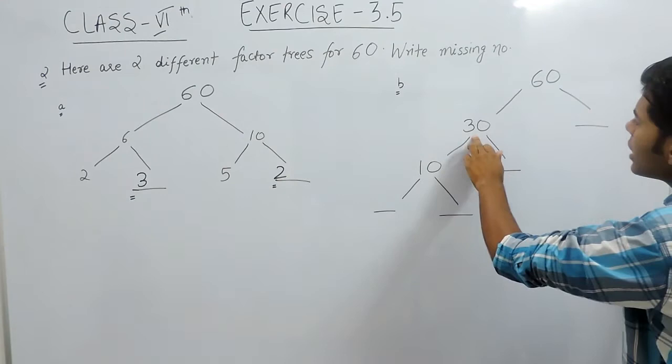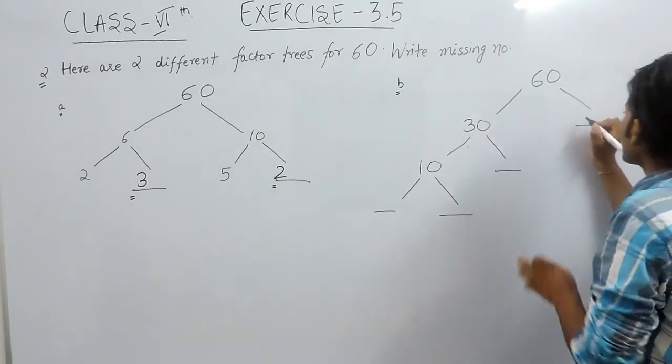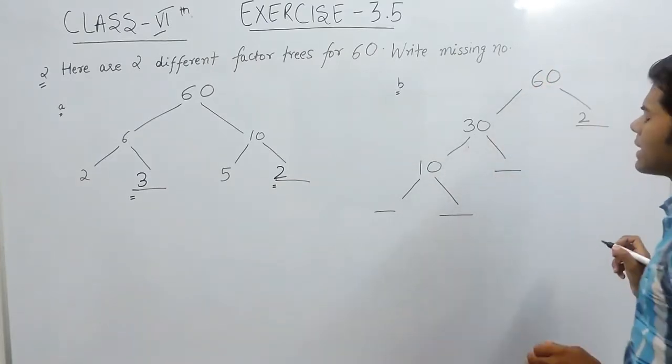it is given that 60 can be written as 30 multiplied with a blank. We already know that if we multiply 30 with 2, the answer will be 60.